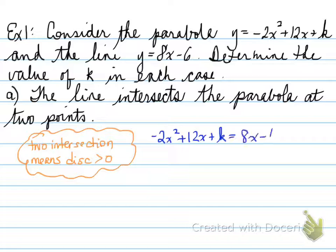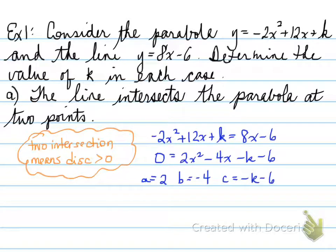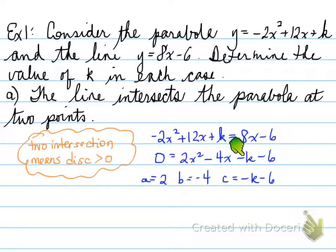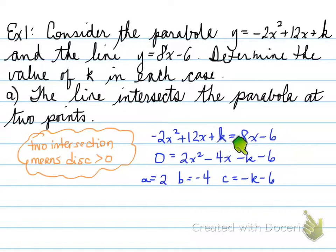If we take both equations and set them equal to each other, we can find the intersection. Moving everything over and collecting like terms, we find that our a value is 2, our b value is negative 4, and our c value contains k. k belongs in the c value because it has no x or x squared next to it — it is the constant term.